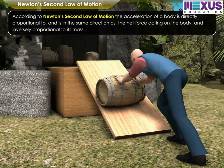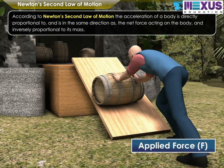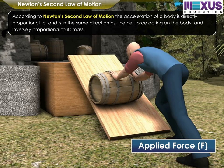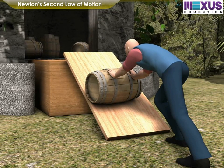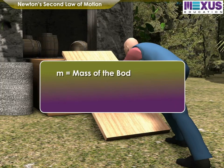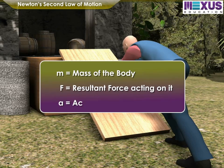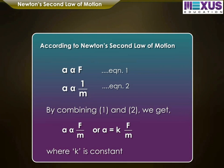According to Newton's Second Law of Motion, the acceleration of a body is directly proportional to, and in the same direction as, the net force acting on the body, and inversely proportional to its mass. Let M be the mass of a body, F be the resultant force acting on it, and A be the acceleration. Acceleration in the direction of force is directly proportional to the force. Therefore, A is directly proportional to F.